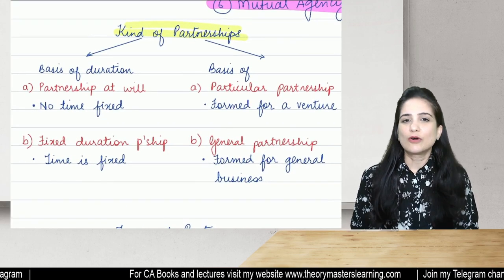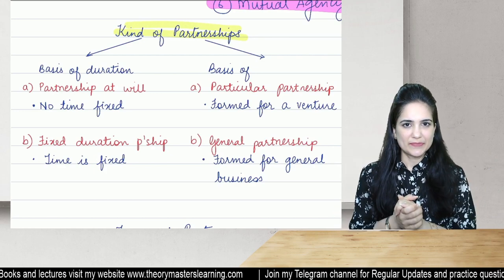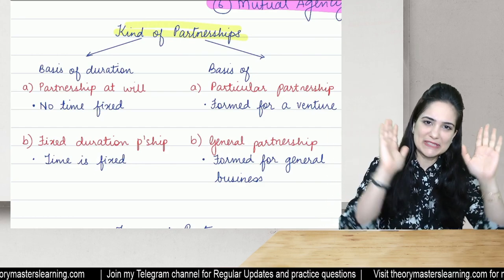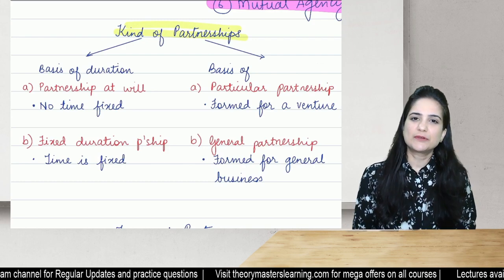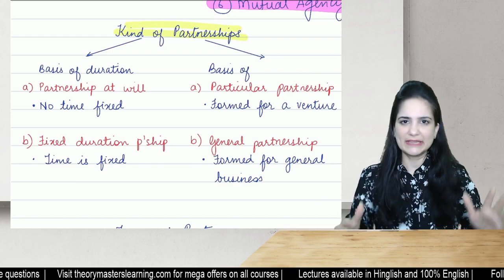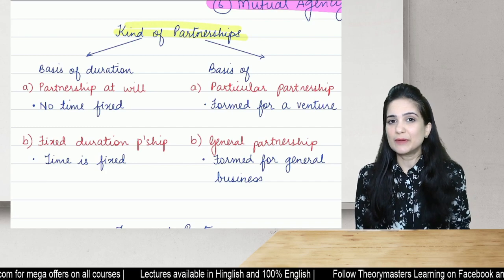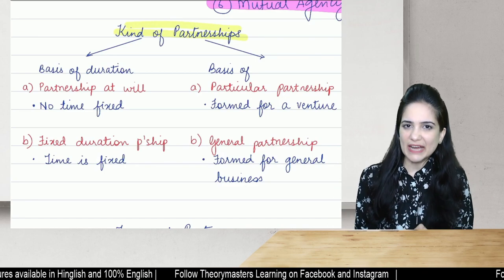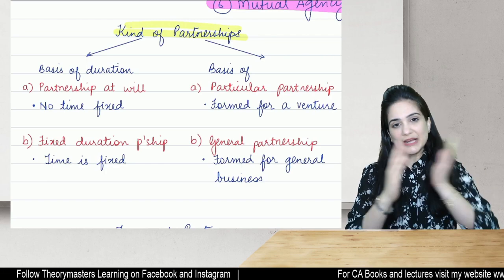Partnership may be classified on the basis of duration as partnership at will or fixed duration partnership. Partnership at will means the partnership is formed without deciding an end date — we will continue till we are enjoying doing business together. Fixed duration partnership means the duration is fixed, like doing business for two or three years and then reviewing.